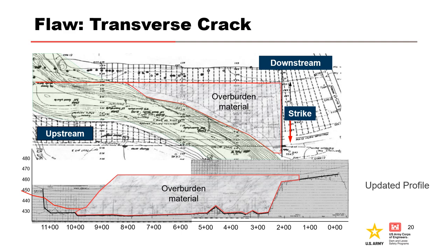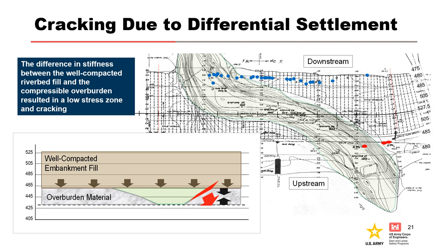A large triangular area of compressible overburden material was left in place as shown on the plan view. This was verified by exploratory boring hole A, advanced after the start of the incident in 1949, which showed low plasticity clay down to an elevation of 431. Zooming out, this area with the seeps and leaks is shown in blue, and the internal erosion entrances are shown in red. Examination of the profile along the center line of the embankment provides a better picture of what is causing this flaw.